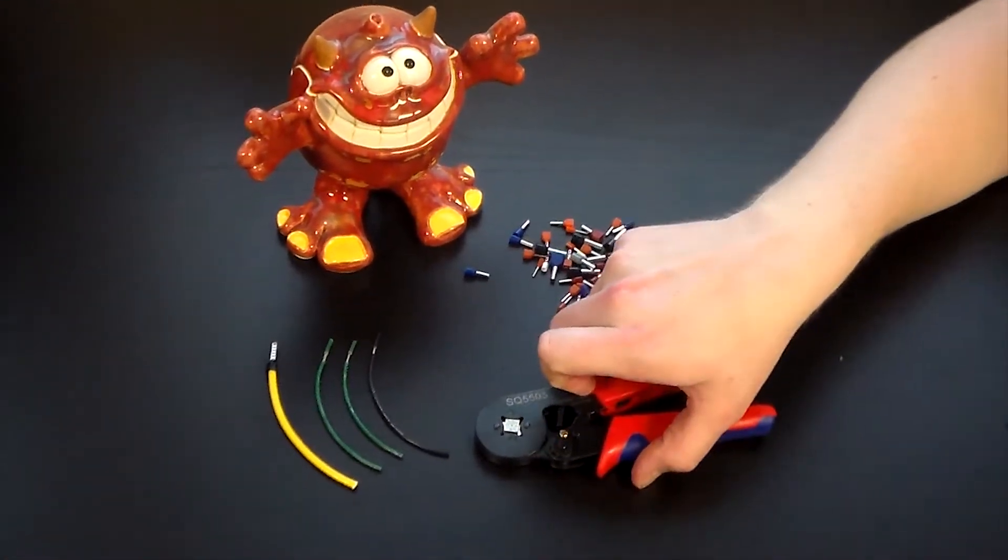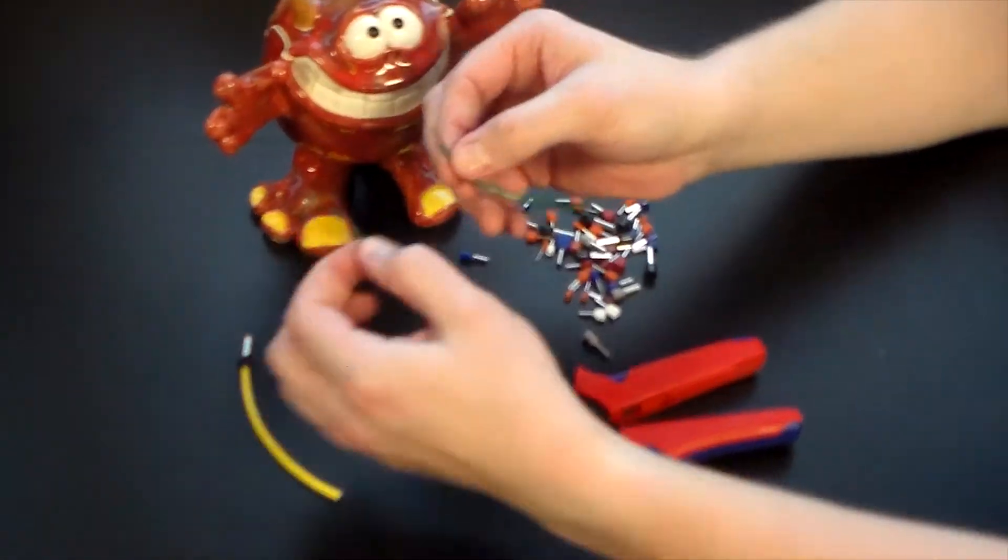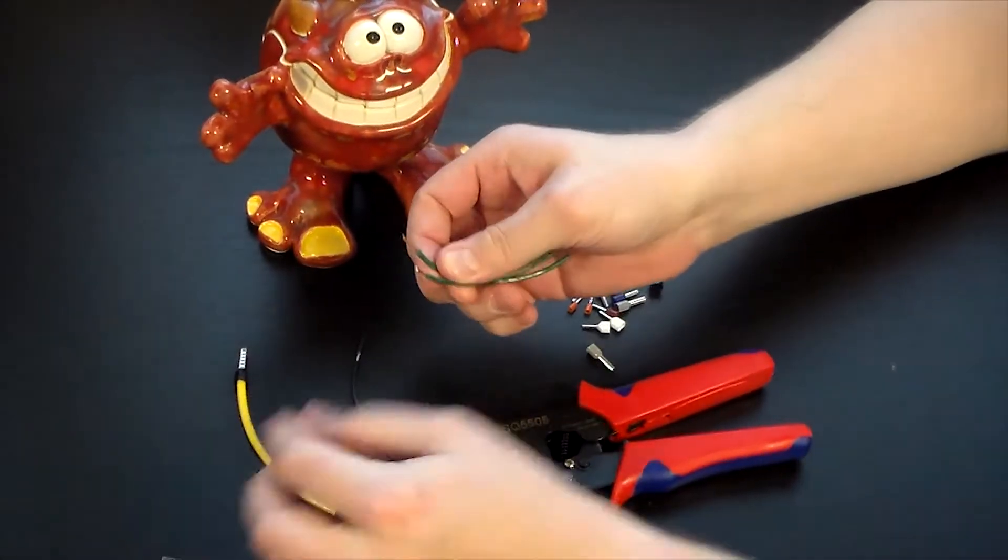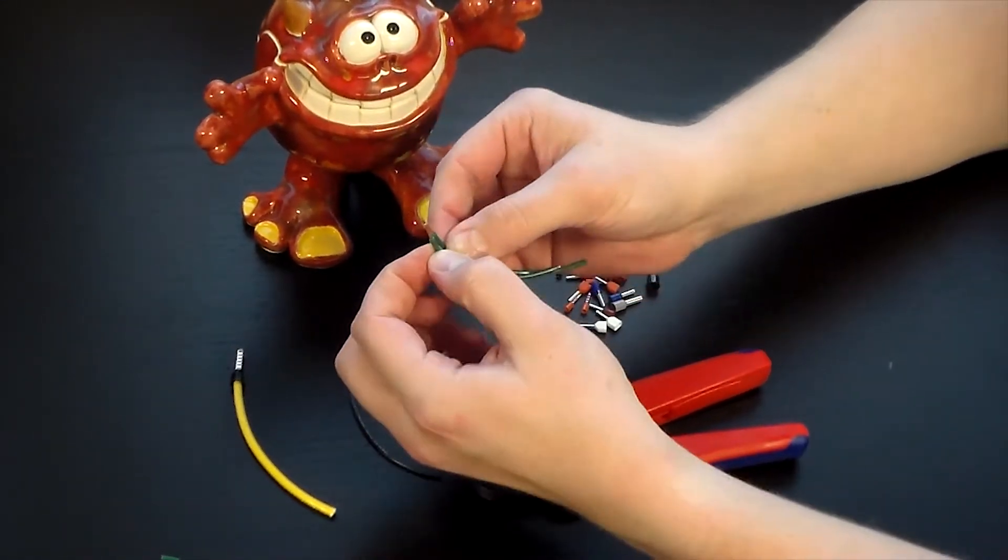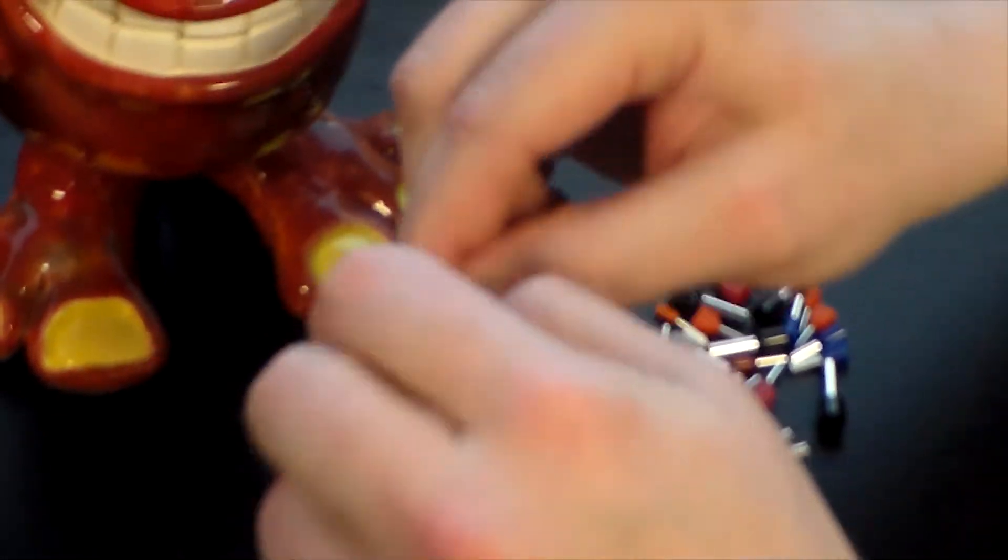It also does twin wire. Twin wire ferrules, it'll do 28-gauge to 14-gauge because the 14-gauge twins will be a larger diameter. So you want to go ahead and twist those together to make it a little easier to funnel them inside of the twin wire ferrule.